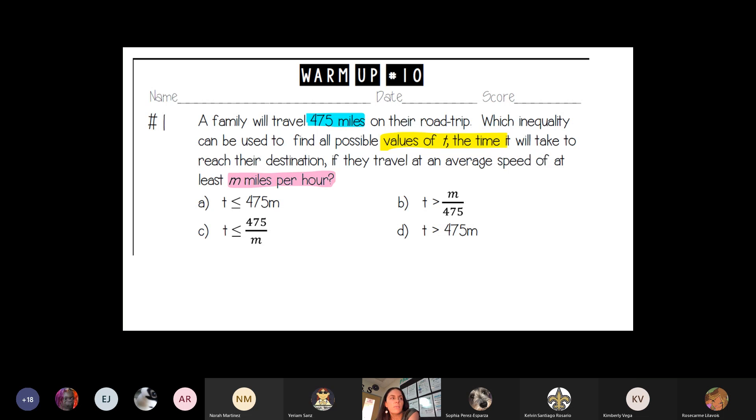So how do you figure out the amount of time it will take to travel a certain distance? Well, you're going to take the time and you have to take your distance and divide it by your miles per hour, because distance divided by your speed will give you your time. So that's going to match letter C for your warm-up number 10.